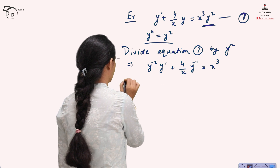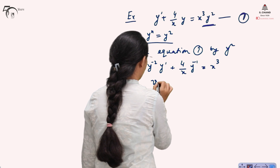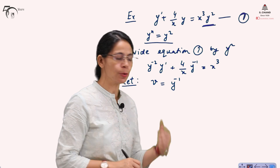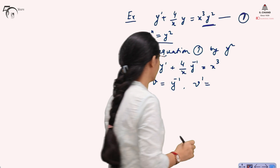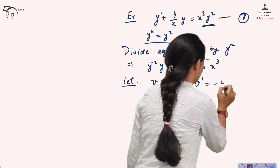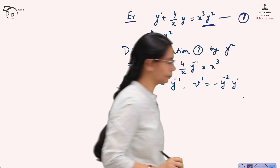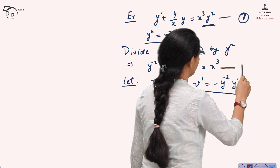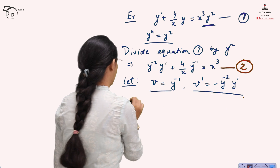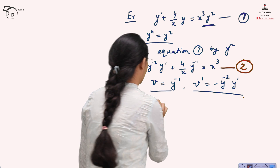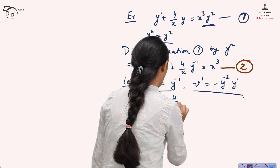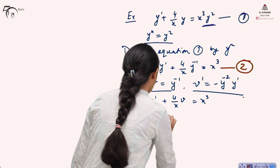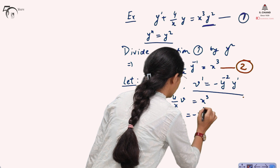Next step: make the substitution. Let v = y^(-1), since we substitute y^(1-n) = y^(1-2) = y^(-1). Then v' = -y^(-2) y'. Substituting v and v' into equation 2, it becomes: -v' + (4/x)v = x³, or v' - (4/x)v = -x³. This is now a first-order linear differential equation.